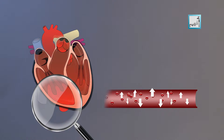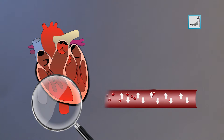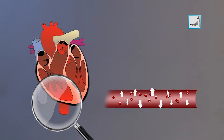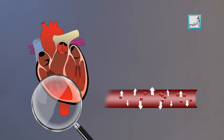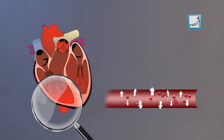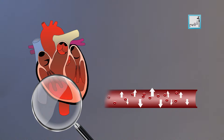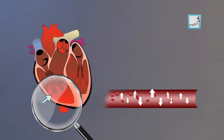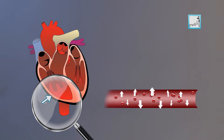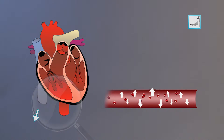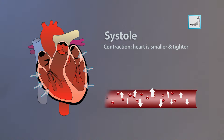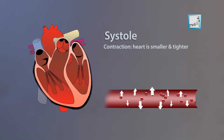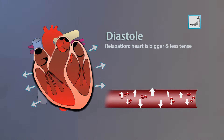Each heartbeat pushes blood out of the heart into the arteries. Then the heart relaxes while getting ready for the next pumping beat. So in fact, we observe two actions here: the contraction and the relaxation. The contraction is called systole and the relaxation diastole.